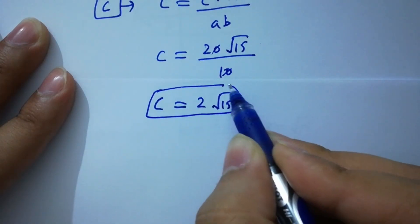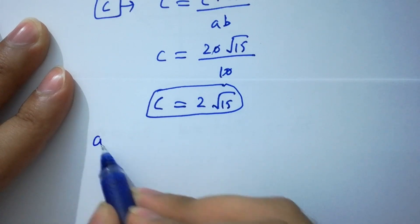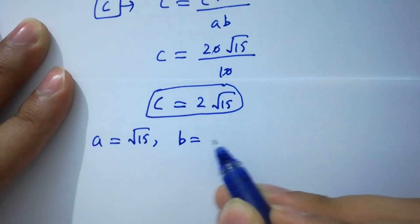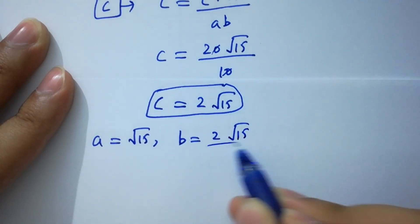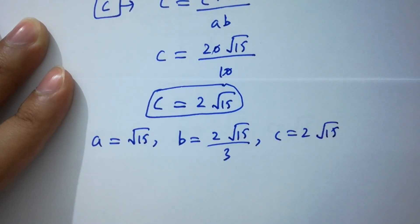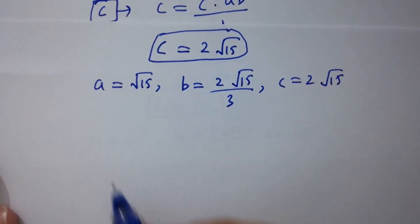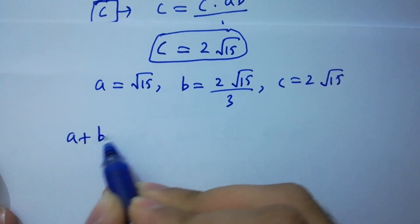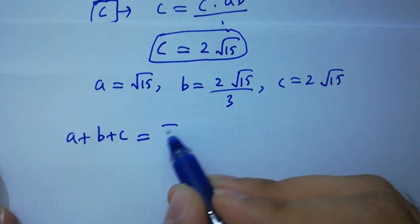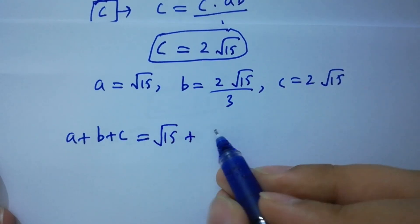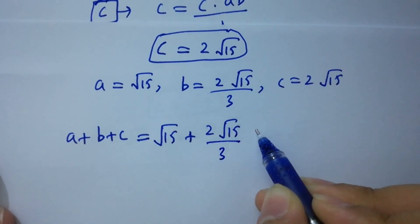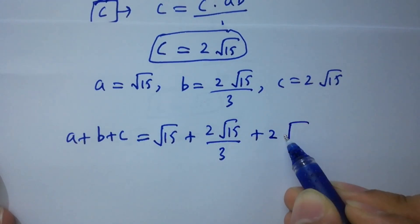So we have a equal to square root of 15, b equal to 2 square root of 15 over 3, and c equal to 2 square root of 15. Now I am going to find a plus b plus c. That is square root of 15 plus 2 square root of 15 over 3 plus 2 square root of 15.